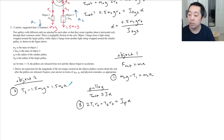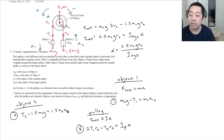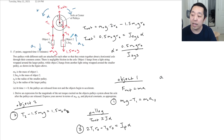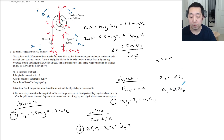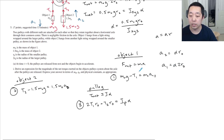Now I need to connect the accelerations. Note that a₂ equals the tangential acceleration at radius r₀, and the relationship between tangential and angular acceleration gives a₂ equals alpha times r₀. For object 1 at the larger radius, its tangential acceleration is different: a₁ equals alpha times 2r₀. So the two blocks have different linear accelerations because they sit at different radii on the pulley.